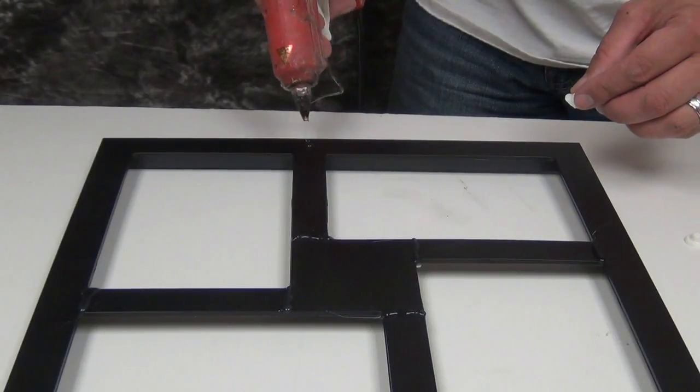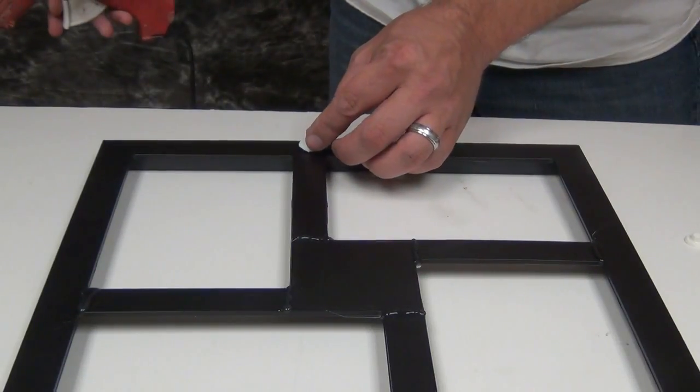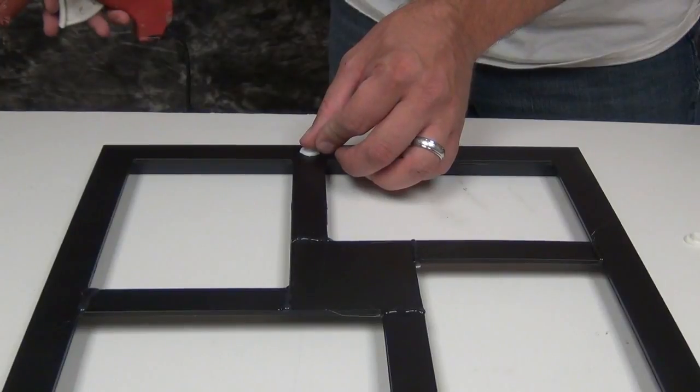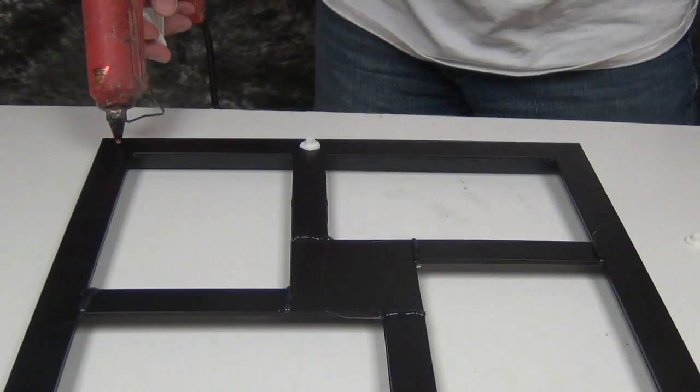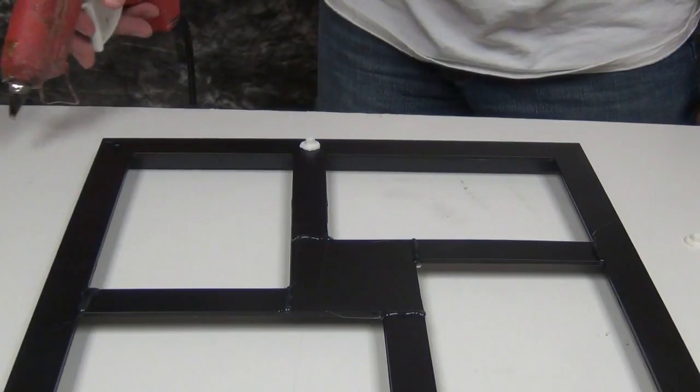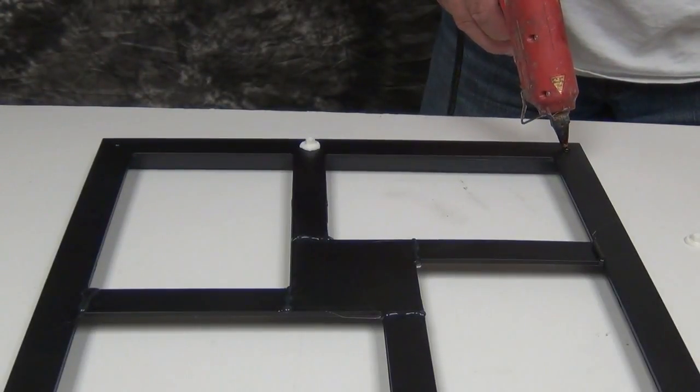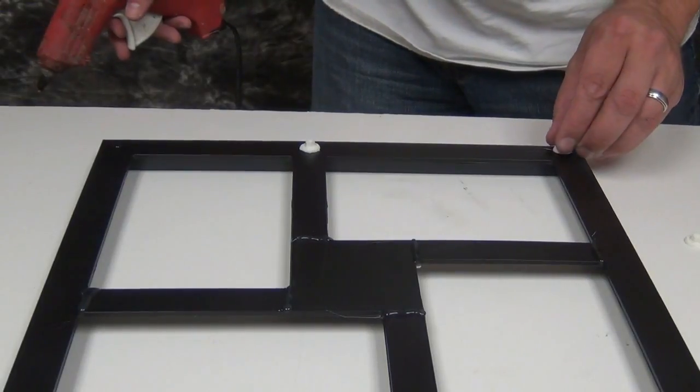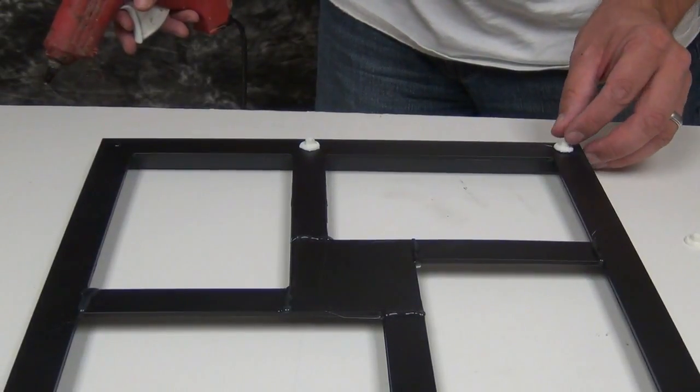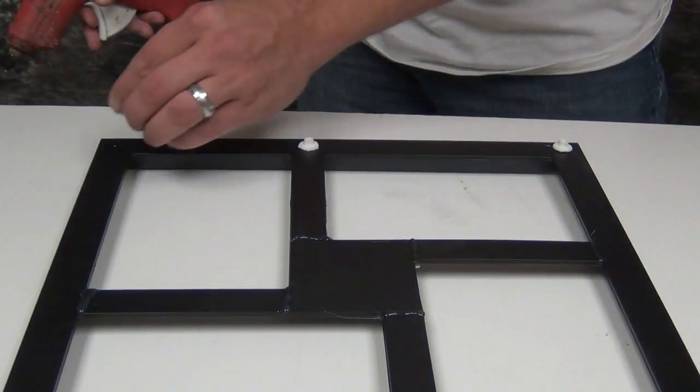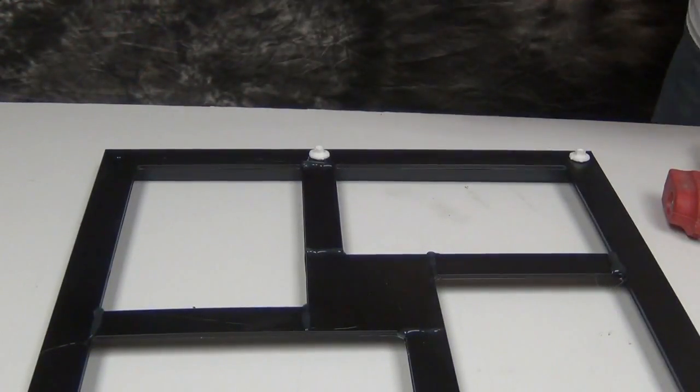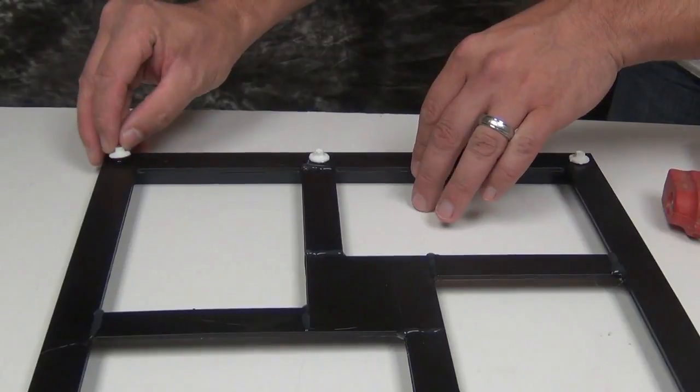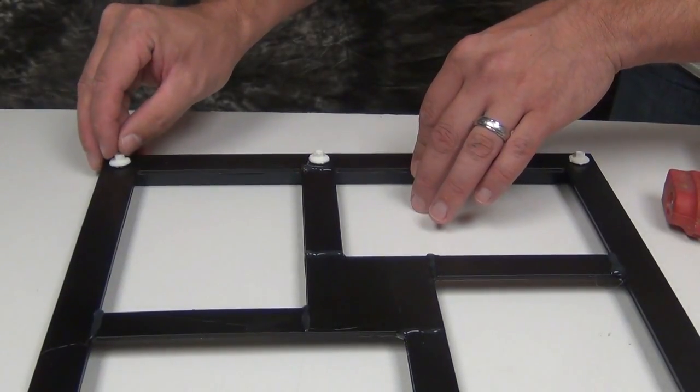These particular bolts and screws are some that I cast in resin and I'm just hot gluing in place here. But keep in mind you could actually use real sheet metal screws just cut off, and again either hot glue or use some epoxy or super glue to anchor those in place. Adding this little touch really adds a lot to the realism of a piece like this.